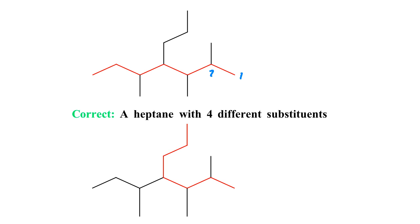Because when I look at the numbers here, I've got 1, 2, 3, 4, 5, 6, 7. So I have a heptane. This heptane has got four different substituents. It has a methyl here, a methyl here, a methyl here, and then it has a propyl group hanging up top.